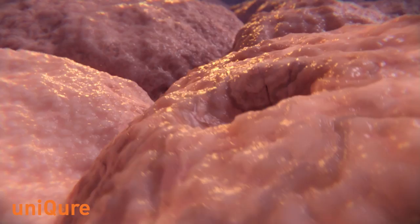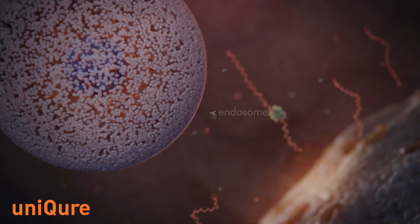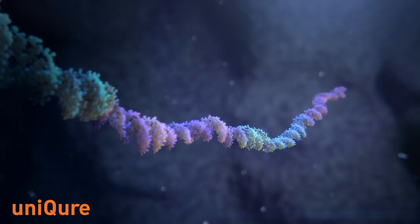Once inside the target cell, therapeutic genes within the AAV can correct defective or missing protein function. To achieve this, AAV genetic material is replaced with a therapeutic gene to restore natural function of the disrupted proteins.